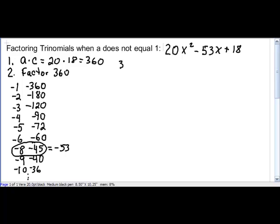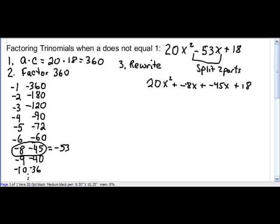Our third step is going to be to rewrite our polynomial. We're going to split the b term into two pieces, using these factors that we have here. So we're going to rewrite it as 20x² + (-8x) + (-45x) + 18. These two things, if we combine the like terms, gives us what we have.